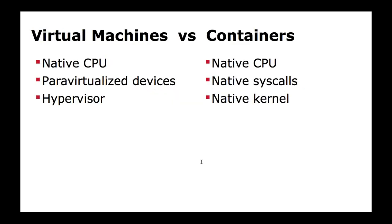A quick recap table: both VMs and containers use native CPU. But VMs use paravirtualized devices while containers use native system calls — just like on a normal machine. In the case of virtual machines, a hypervisor arbitrates resources; each time the VM accesses the outside world, it goes through the hypervisor. Containers just use the native kernel directly. That's why benchmarks show no difference between containers and physical machines.